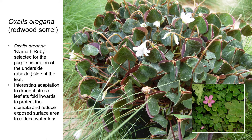Redwood sorrel is one of the most common herbaceous plants in the Coast Redwood Forest, often forming extensive low-growing carpets of foliage with wild ginger. The plant pictured here in the larger photo is a selection of Oxalis oregana called Klamath Ruby, which was selected for the particularly colourful purple pigmentation on the underside of its leaves. You can also see in this photo redwood sorrel's interesting adaptation to drought stress. Normally the three leaflets of each leaf are held horizontally to optimise the capture of sunlight, but in response to drought stress the leaflets fold inwards, protecting the stomata and reducing the exposed surface area, which reduces water loss from the foliage.